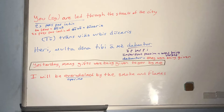Latin to English: 'Heri multa dona tibi a me dabantur.' DABANTUR is third person plural imperfect passive — 'were being given.' MULTA DONA (many gifts) is the subject. TIBI = to you, an indirect object (verb of giving). A ME = 'by me' — personal pronoun as ablative of agent. Translation: 'Yesterday many gifts were being given to you by me.'